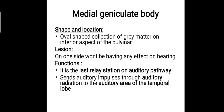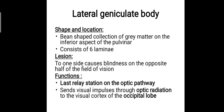The medial geniculate body is an oval-shaped collection of grey matter on the inferior aspect of the pulvinar. If a lesion happens to one of the medial geniculate bodies on either side, it won't have any effect on hearing. But if both are involved, there will obviously be an effect on hearing. It is the last relay station on the auditory pathway, sending auditory impulses through auditory radiation to the auditory area of the temporal lobe.